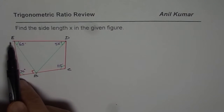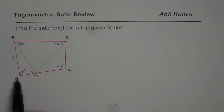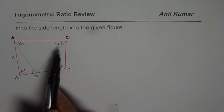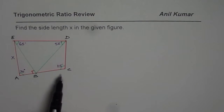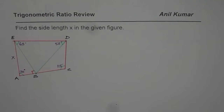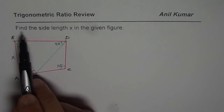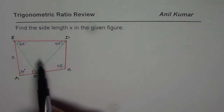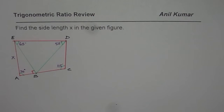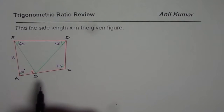Side EA is what you need to find. We are given a figure with different sets of angles and a triangle in between. The question is: find the side length X in the given figure. In such a case, you should carefully see from where to start — that is kind of important.